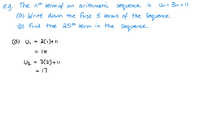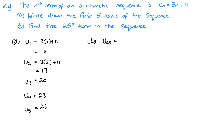I can save myself a little bit of time now and just add 3 to get the remaining terms: 20, 23, and 26. Part B just wants the 25th term, so U25 = 3 × 25 + 11 = 75 + 11 = 86.